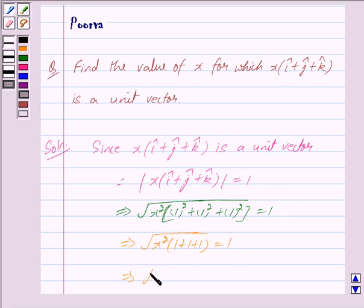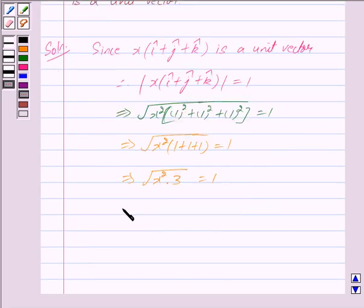Which further implies √(3x²) = 1. This further implies ±√3·x = 1, and therefore x = ±1/√3.